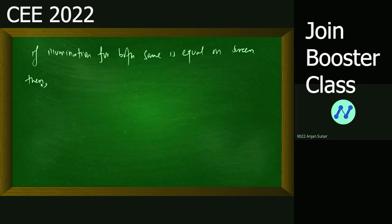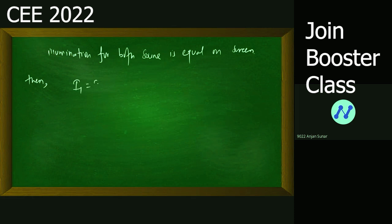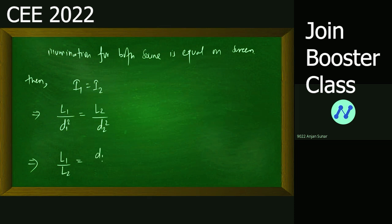If the illumination for both sources is the same, then i1 equals i2. So: L1 divided by d1 squared equals L2 divided by d2 squared. From this, d1 by d2 squared gives the principle used to solve the question.